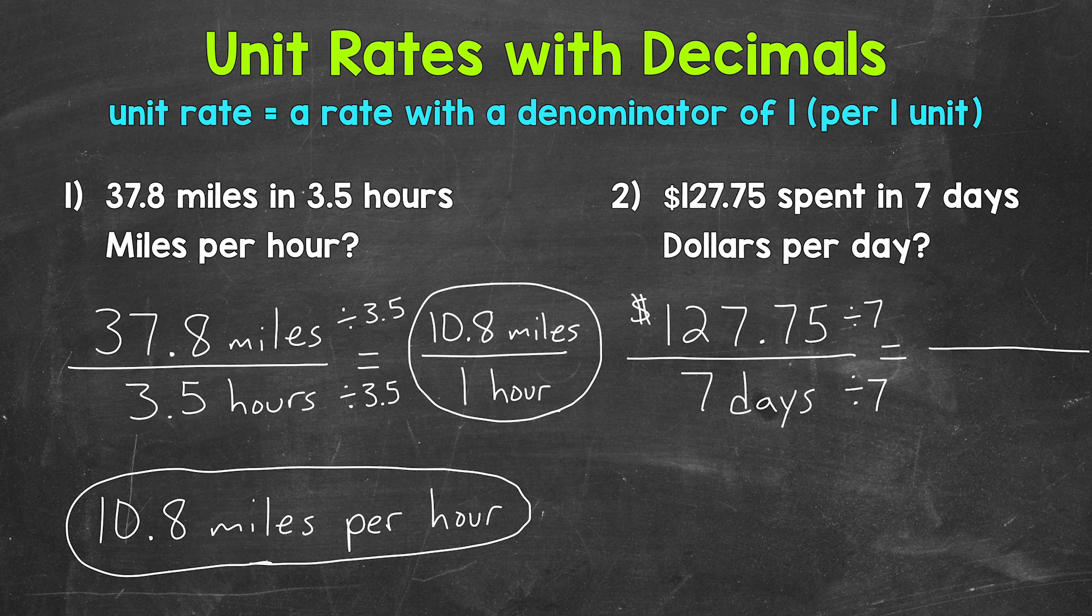7 divided by 7 gives us 1. And that's 1 day. And then $127.75 divided by 7 gives us $18.25.